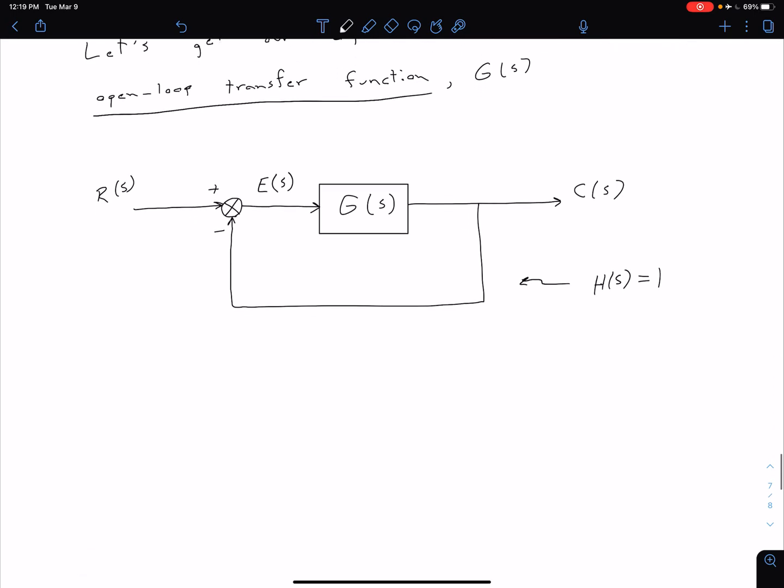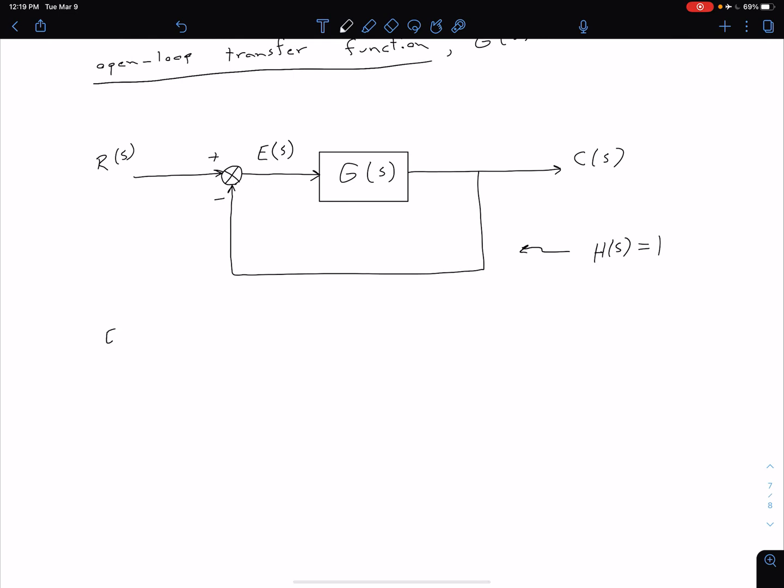We can do similar analysis as to what we saw in the previous video. We can say our error signal is, of course, our R of S minus C of S, as I just said.